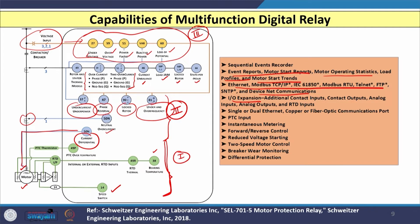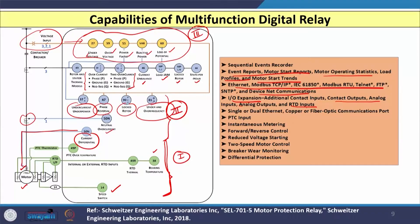Several input-output expansions are also available — analog input, analog output, inputs for resistance temperature detectors for temperature measurement. Instantaneous metering is also available, along with control facilities like reduced voltage starting, breaker wear monitoring, or differential protection. All such additional features are available in a single digital or multifunction digital relay.